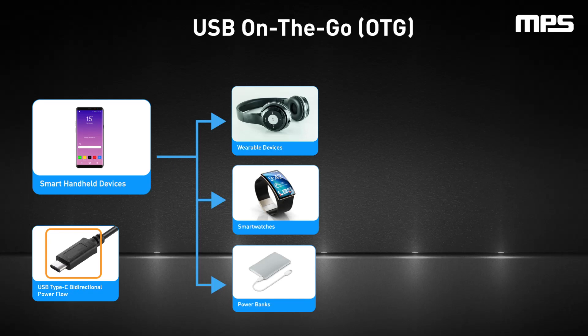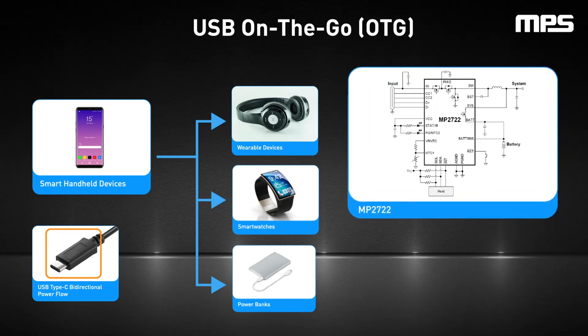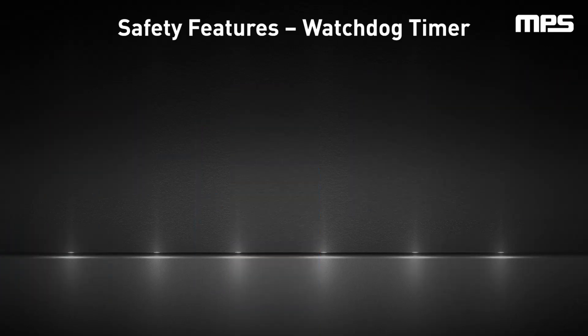This feature can be found in many common products, such as notebook computers, smartphones, and power banks. The MP2722 is a high-efficiency buck charger that integrates the required functionality of USB Type-C source mode and dual-role power mode.